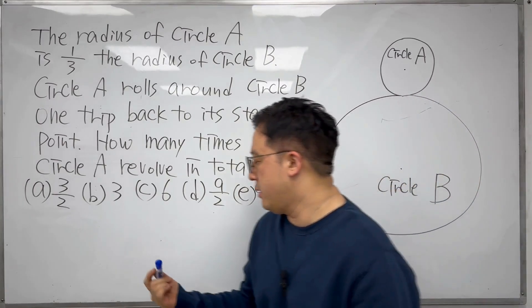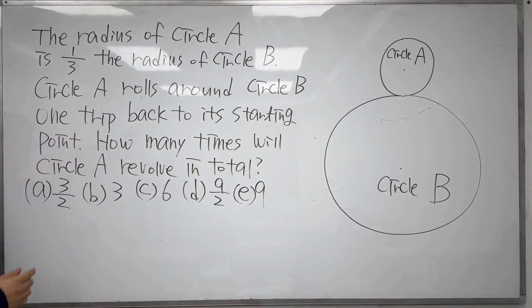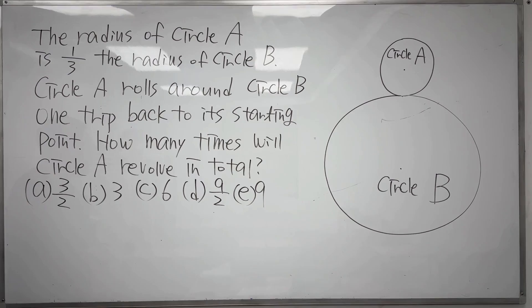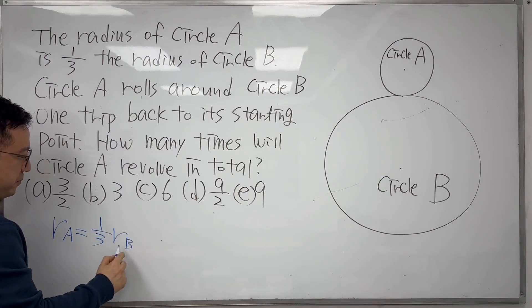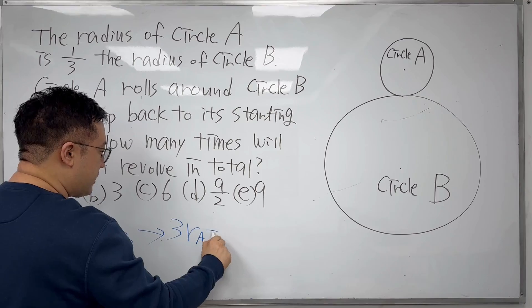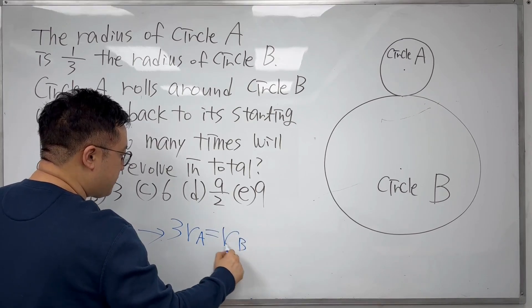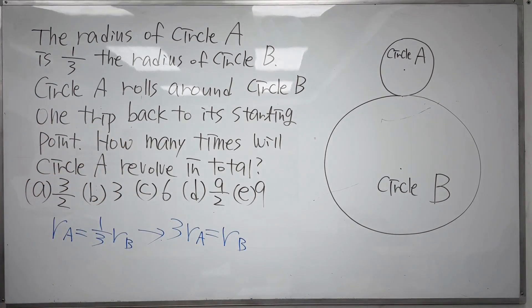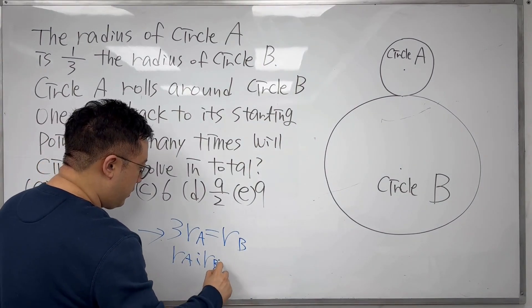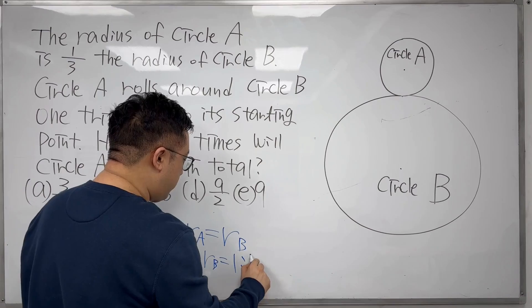So what they think is this. The condition is now the radius of circle A is one-third the radius of circle B. That means the radius of circle A is 1/3 times the radius of circle B, which means 3 times the radius of circle A equals the radius of circle B. So the ratio of RA to RB is equal to 1 to 3.